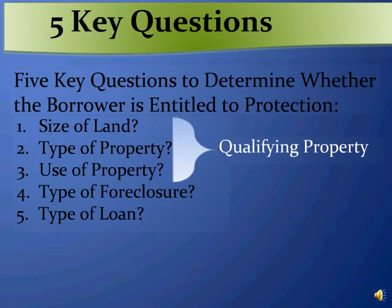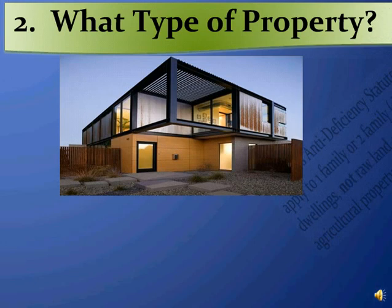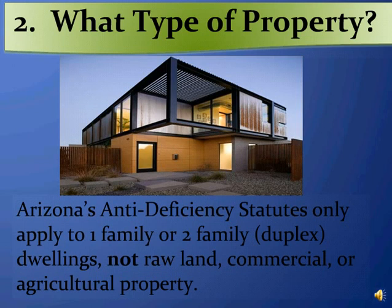First, the size of the land. In order to qualify for protection, the property must be 2.5 acres or less. If the property is more than 2.5 acres, it is not qualifying property and the anti-deficiency statutes do not apply. Second, we need to know what type of property the lender is foreclosing on. Arizona's anti-deficiency statutes only apply to one-family or two-family dwellings, not raw land, commercial, or agricultural property.